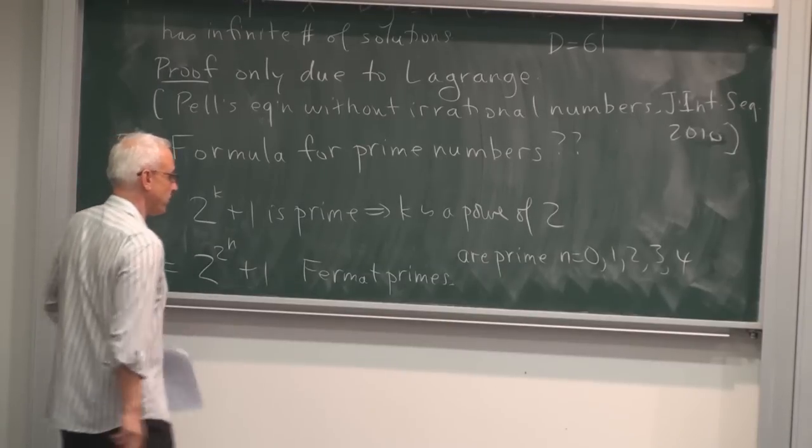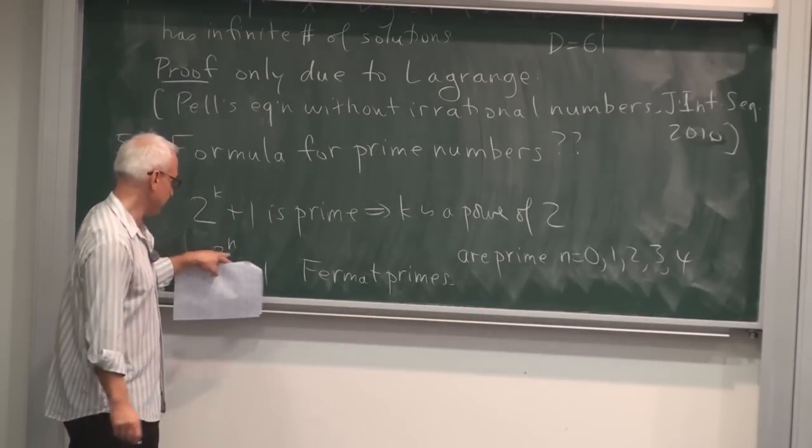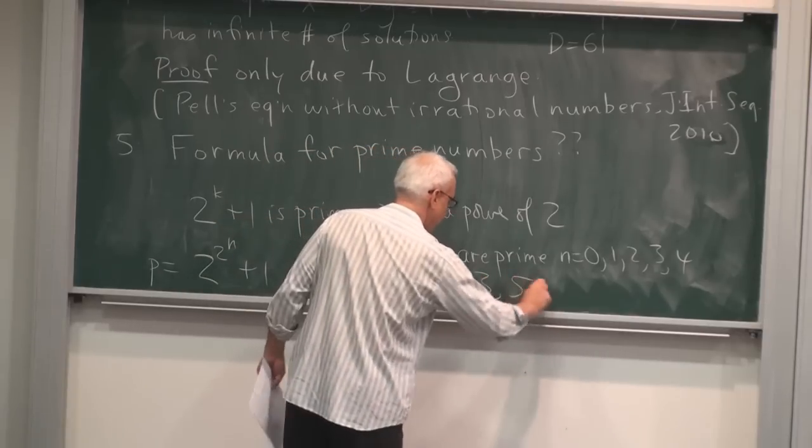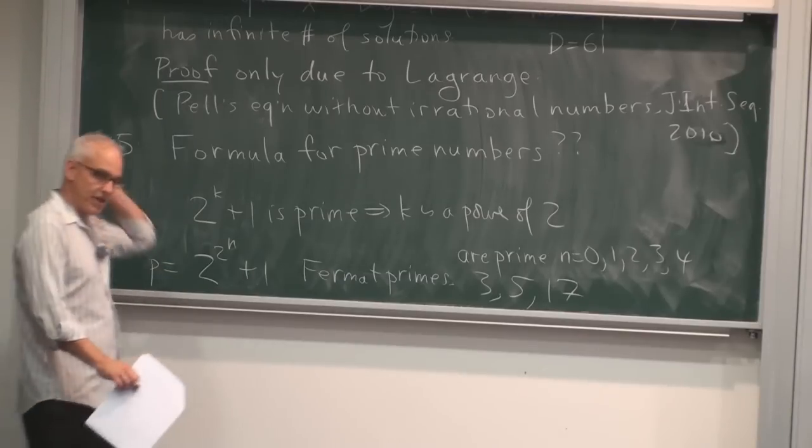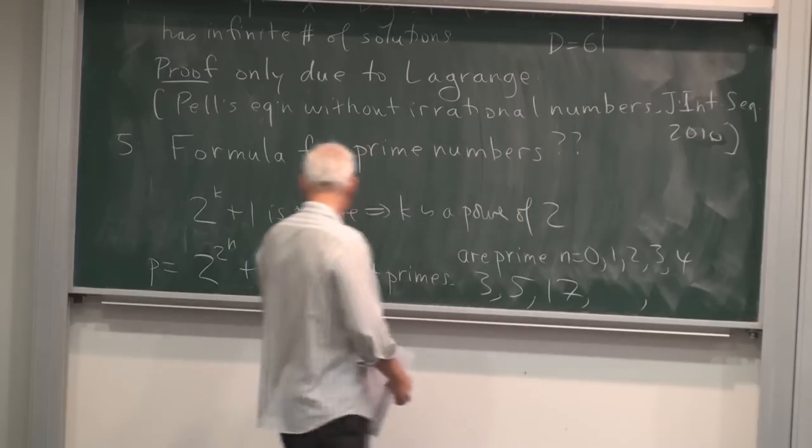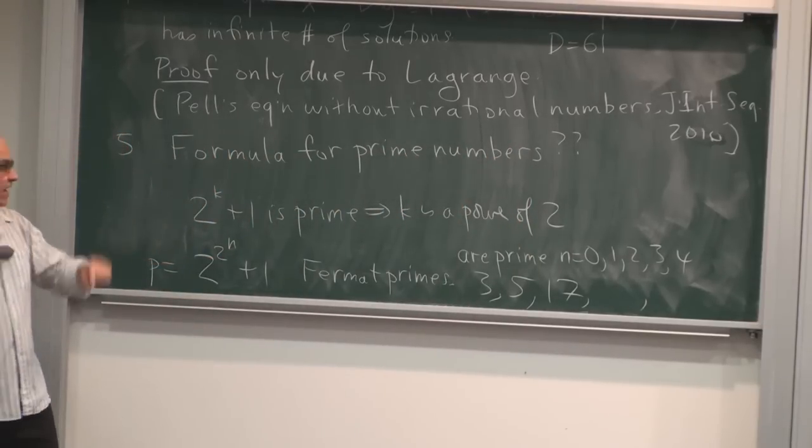But Fermat's idea was that we should look for a prime of the form 2 to the k plus 1. We've talked about 2 to the k minus 1. 2 to the k plus 1 is prime. It's not too hard to see. If it is prime, it means k is a power of 2. So in other words, we're actually talking about something in the form 2 to the 2 to the n plus 1. Primes of this form are called Fermat primes. And it's known that they are prime. They are prime for the first 5 when n is equal to 0, 1, 2, 3, and 4. And those primes are...